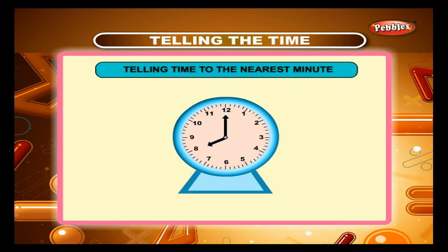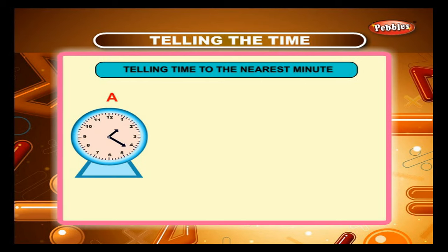There are 60 marks on the face of a clock, which the minute hand moves in 1 minute. On clock A, the minute hand has moved 22 marks after 1 o'clock. The time therefore is 22 minutes past 1, or 1 hour and 22 minutes.